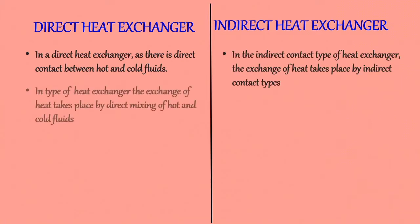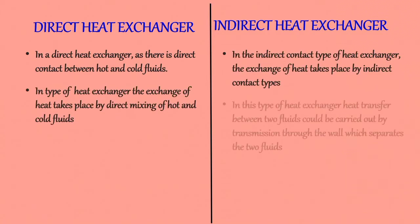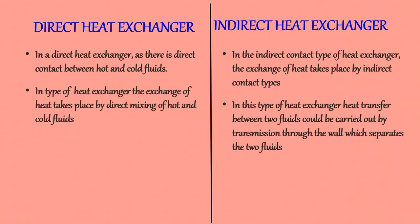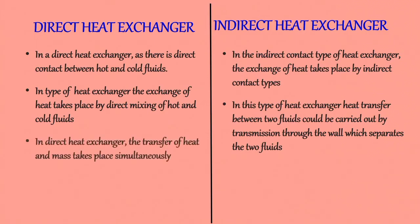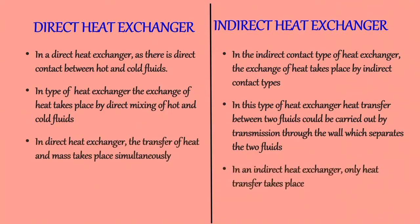In a direct contact type heat exchanger, the exchange of heat takes place by direct mixing of hot and cold fluids. In the indirect type, heat transfer between two fluids is carried out by transmission through the wall which separates the two fluids. In a direct heat exchanger, as there is direct contact between hot and cold fluids, the transfer of heat and mass takes place simultaneously. But in an indirect heat exchanger, as there is no direct contact, only the transfer of heat takes place.